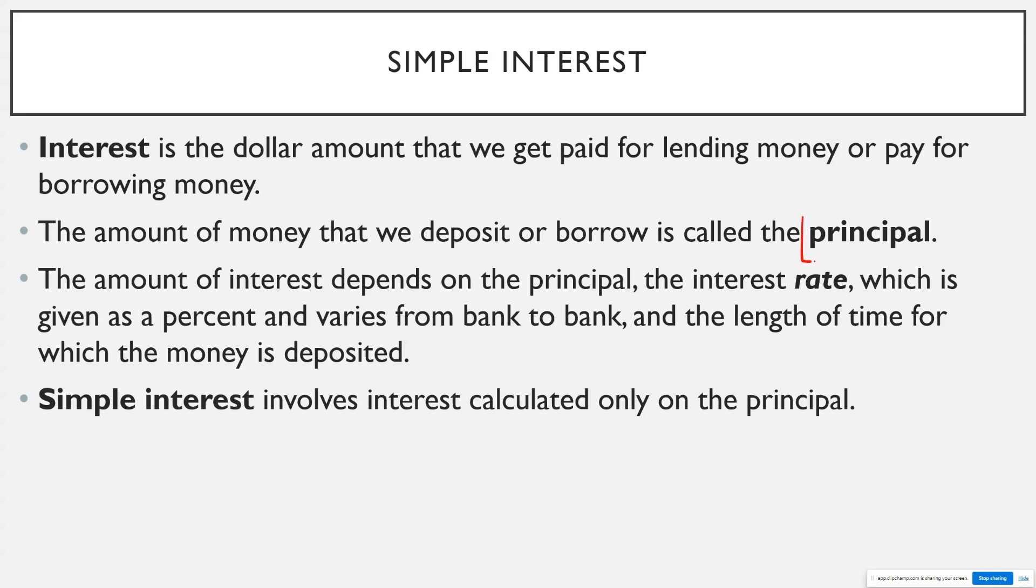The amount of money that we deposit or borrow is what we call the principal. So basically think about the principal as how much I deposit in the bank today or how much the bank loans me. And interest is what is paid on top of that money.